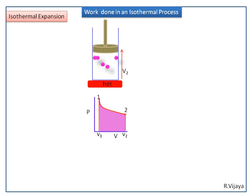According to the first law of thermodynamics, ΔU is equal to Q plus W. In an isothermal process, ΔU is equal to 0, since ΔU is equal to Cv·DT and DT is 0. Substituting this value in the equation, we get Q is equal to minus W.